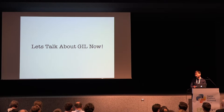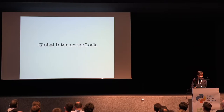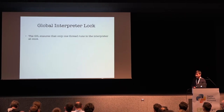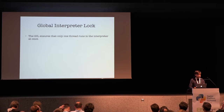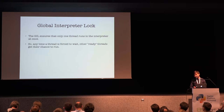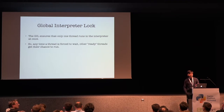So let's talk about GIL now. GIL stands for the Global Interpreter Lock. Basically, GIL ensures that only one thread can hold the interpreter at one point in time. That's the summary of GIL. At any time, any number of threads are forced to wait and only one thread will complete its execution.